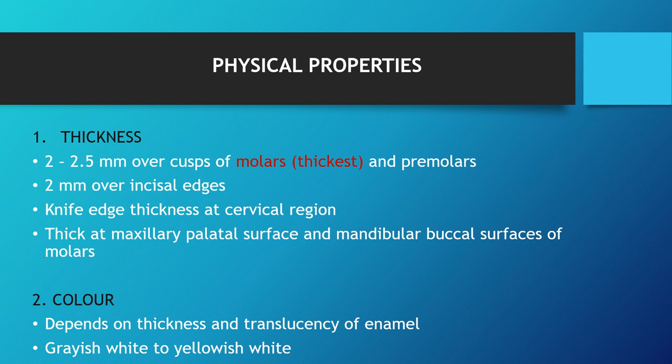Coming to physical properties — thickness: it is 2 to 2.5 mm over the cusps of molars and premolars, and 2 mm over the incisal edges. The thickness of enamel is maximum at the cusp tips and the incisal edges, and it is knife-edge thickness at the cervical regions. It is thick at the maxillary palatal surface and mandibular buccal surface, as these are functional cusp surfaces.